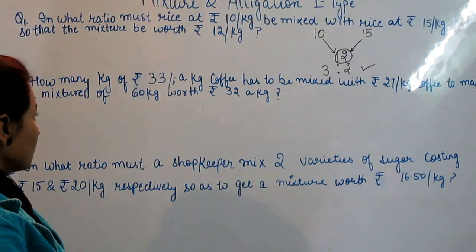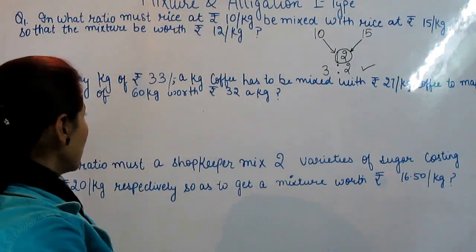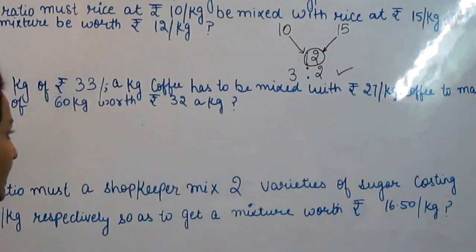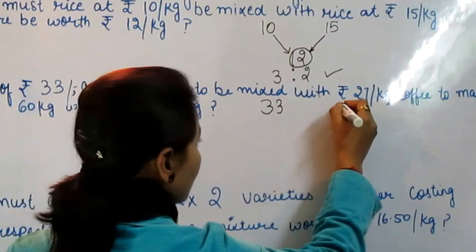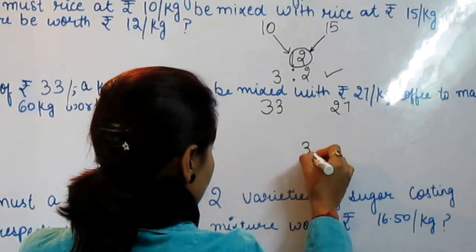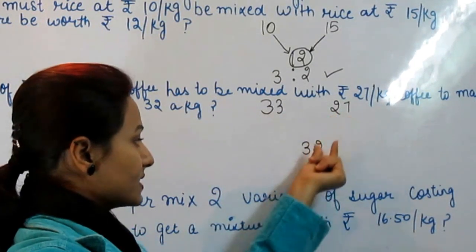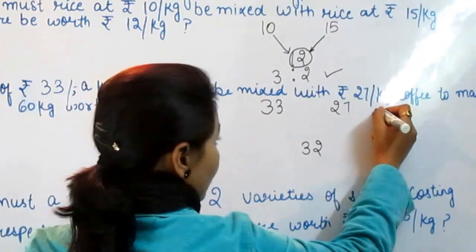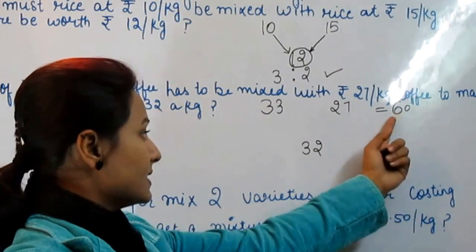Next question: How many kgs of Rs. 33 per kg coffee has to be mixed with Rs. 27 per kg coffee to make a mixture of 60 kg worth Rs. 32 per kg? कुछ coffee 33 रुपए किलो है, कुछ 27 रुपए किलो है। मैंने कितने में लिया? 32 रुपए प्रति किलो में। Total mixture कितना है? 60 kg।